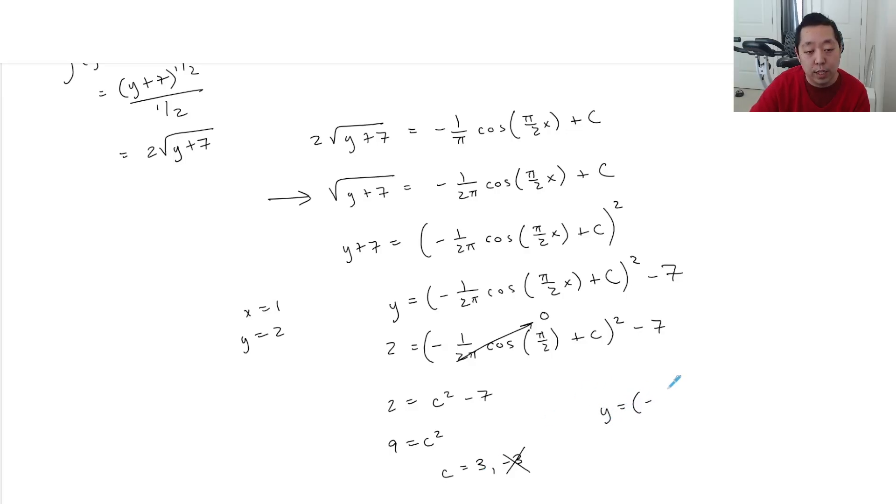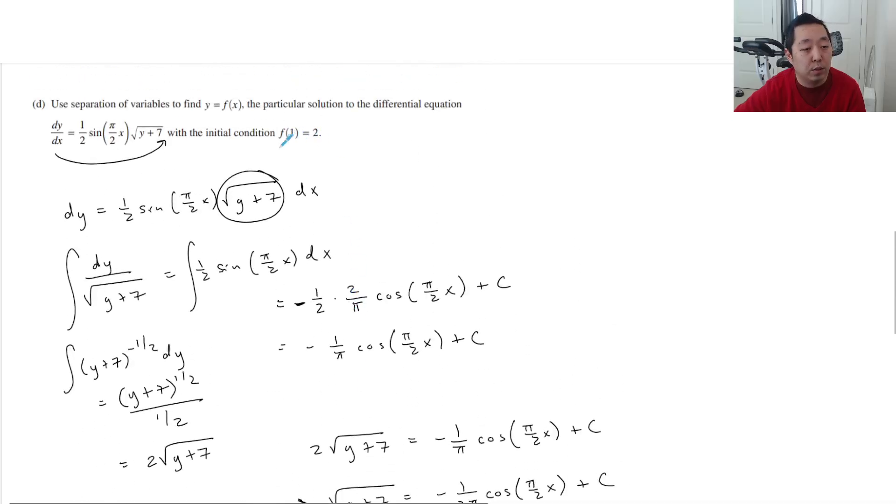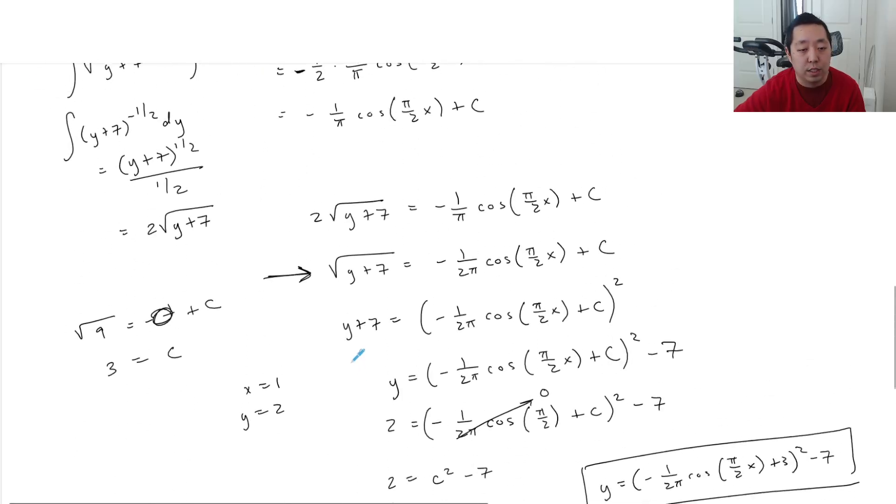So then your answer is y equals negative 1 over 2 pi, cosine pi over 2x, plus 3 squared minus 7. It does matter if you pick positive or negative 3. You cannot put negative 3, because one of the things you may not remember from your algebra, but when I square things, I can get extraneous solutions. So when I squared this, I lost some of the sign information. So that's why it probably would have been better if I had plugged into here. And if you notice here, this is going to be the square root of 9 equals negative 1. Well, this is going to be 0 plus c, and you see directly that c has to be positive 3. It cannot be negative 3, because the square root of 9 is always positive 3, not negative 3. Now, does it have to be positive square root? It does have to be positive square root, because this thing is, yeah, I think, so I don't think there's a way you could justify it to negative 3.